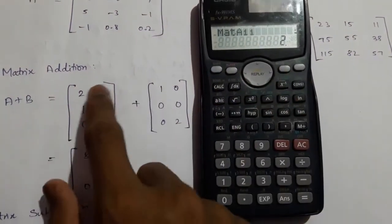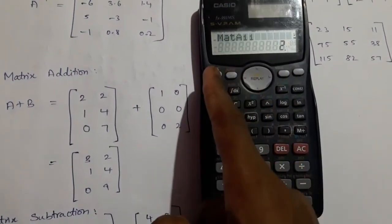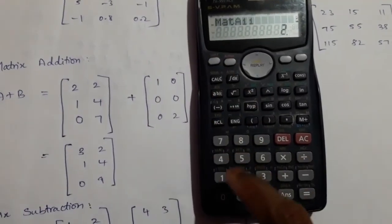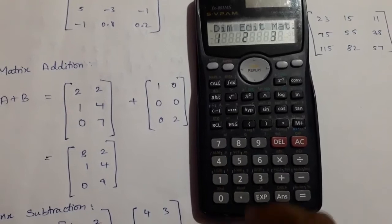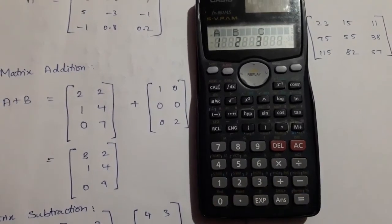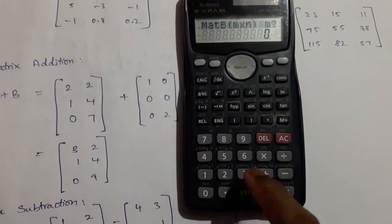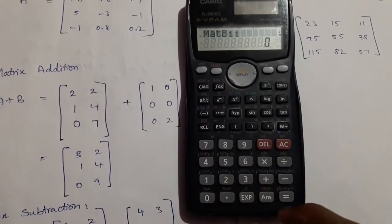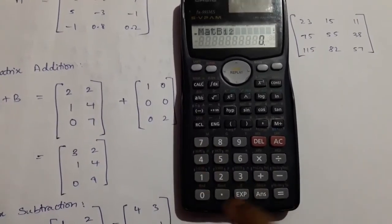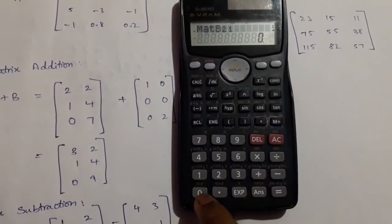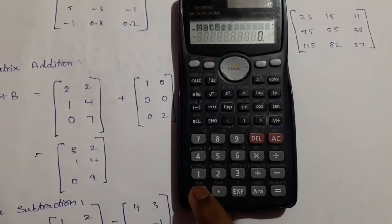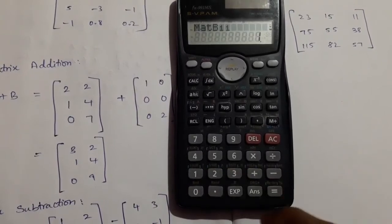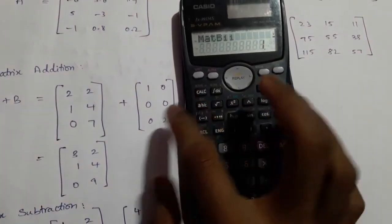Matrix A is filled with these numbers. Then again press Shift, press 4, dimensions — now we want to set matrix B with 3 rows and 2 columns. Enter the elements: 1, 0, 0, 0, 0, 2. Now matrix B is filled with these elements.